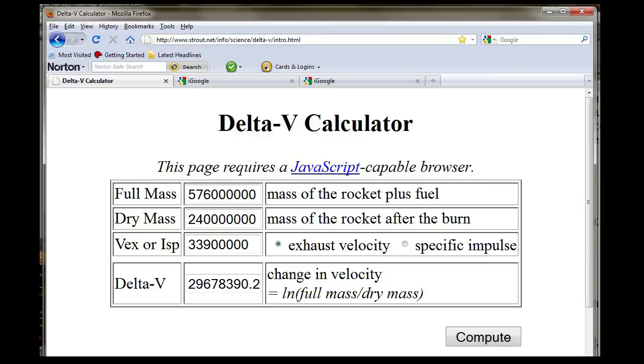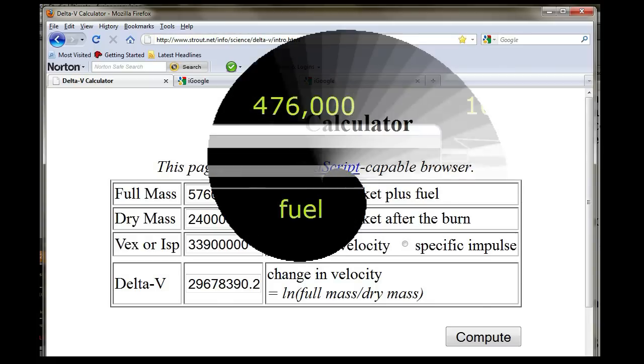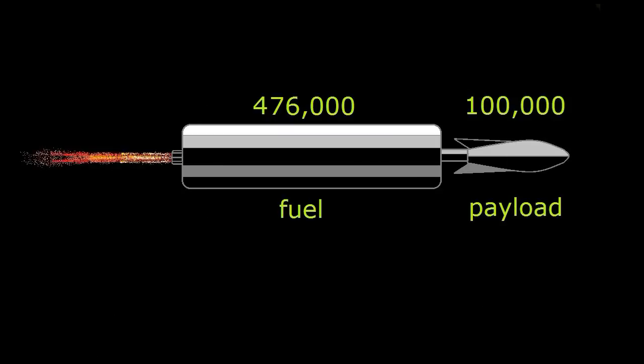So initially, we need 476,000 metric tons of deuterium to go from a dead stop to one-tenth light velocity and back to a dead stop. That's quite a bit of deuterium, isn't it? But getting that much isn't the killer problem.